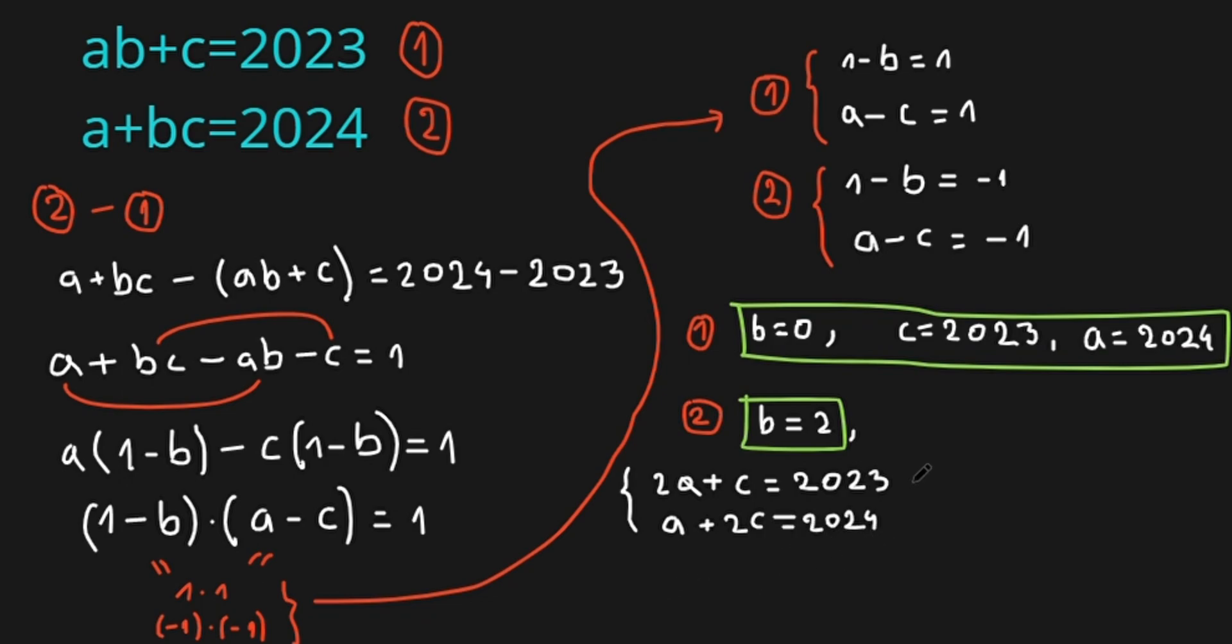Now let's multiply both sides with 2. So we have 4A plus 2C equals 4046, and A plus 2C equals 2024. Now by subtracting the first one from the second one, we have 3A equals 2022, so A is 674.